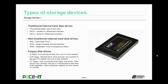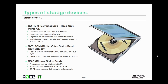Floppy drives had a maximum capacity of 1.44 megabytes. Now let's move on to the CD-ROM, the compact disk read-only memory. When these first came out, they commonly used the PATA interface, but now more than likely you'll find them with the SATA interface. The CD-ROM has a maximum capacity of 700 megabytes.